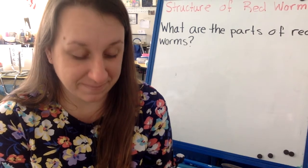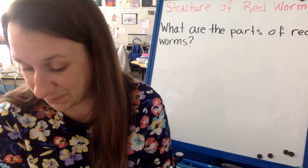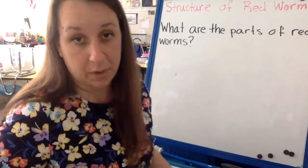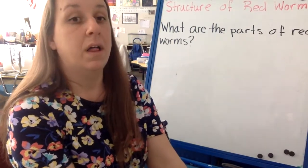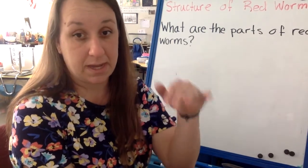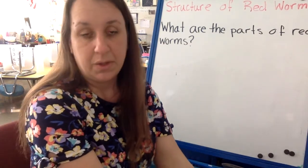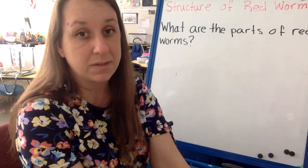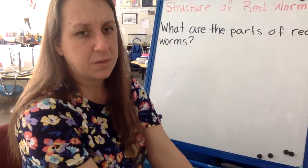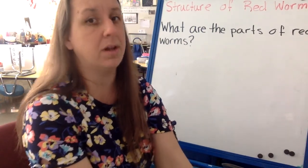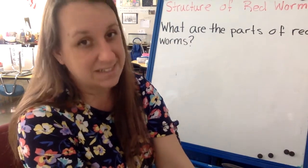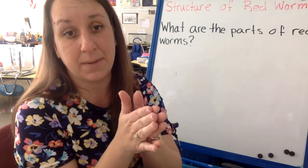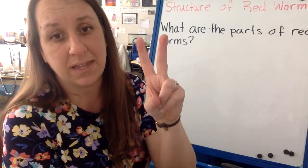That larger swollen area is called a clitellum. Another way to say clitellum is 'saddle' — yes, just like a saddle that you put on a horse. It's not always easily seen on red worms, but if you have a larger, older red worm, which many of you do, you can definitely see the larger swollen ring called the clitellum. Now I want you to take your worm and gently place him back on top of the soil pile on your plate and observe what it does. So we talked about body — the worm has a body. We know that the worm has a top side and a bottom side. We know that the worm's body is made up of segments or rings, and that there's one large swollen segment called the saddle — the clitellum. Let's clap that out: cli-tel-lum. How many syllables is that? Three.